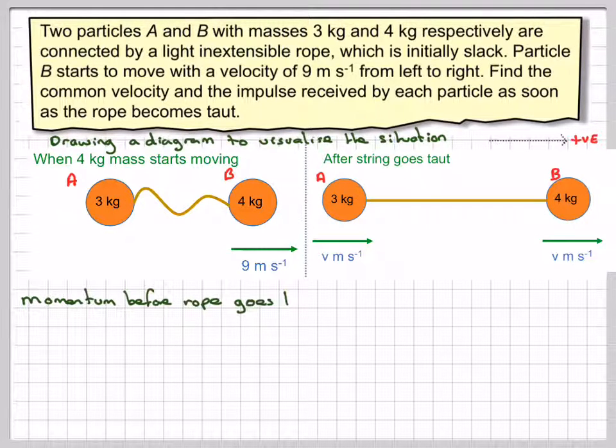Momentum before the rope goes taut will be mAuA plus mBuB, but uA will be equal to 0, and this will be equal to 9.